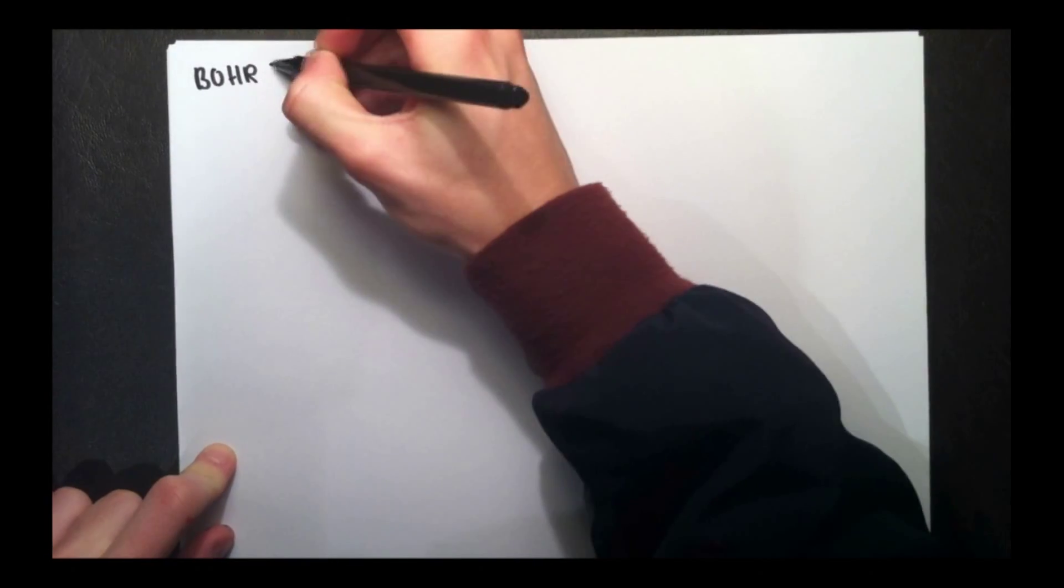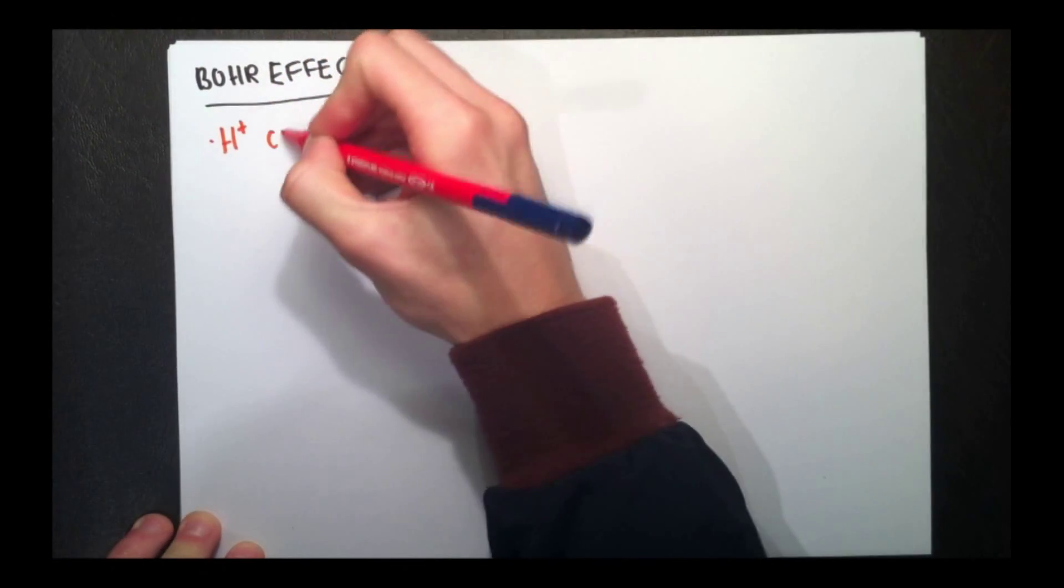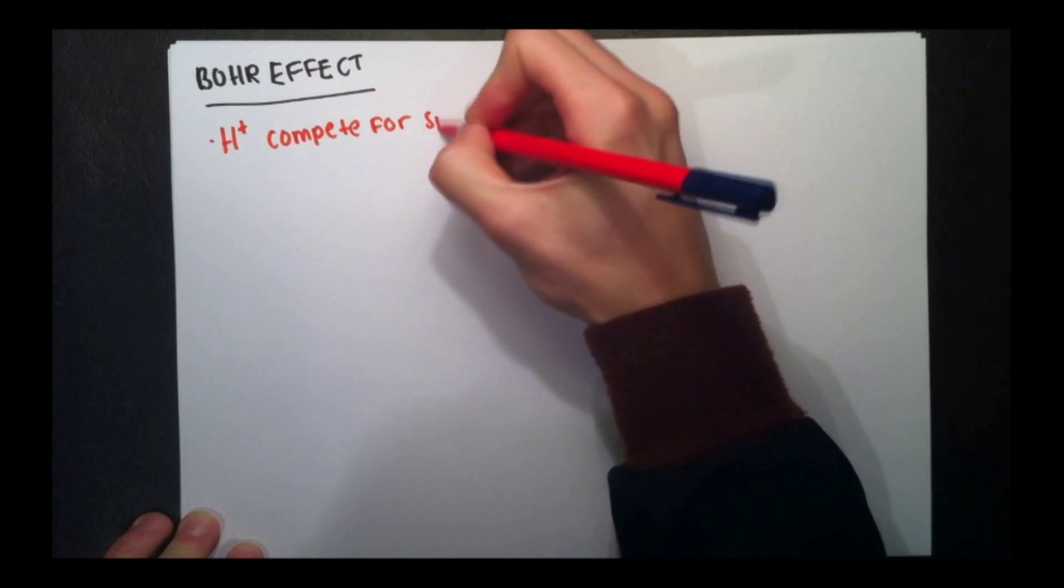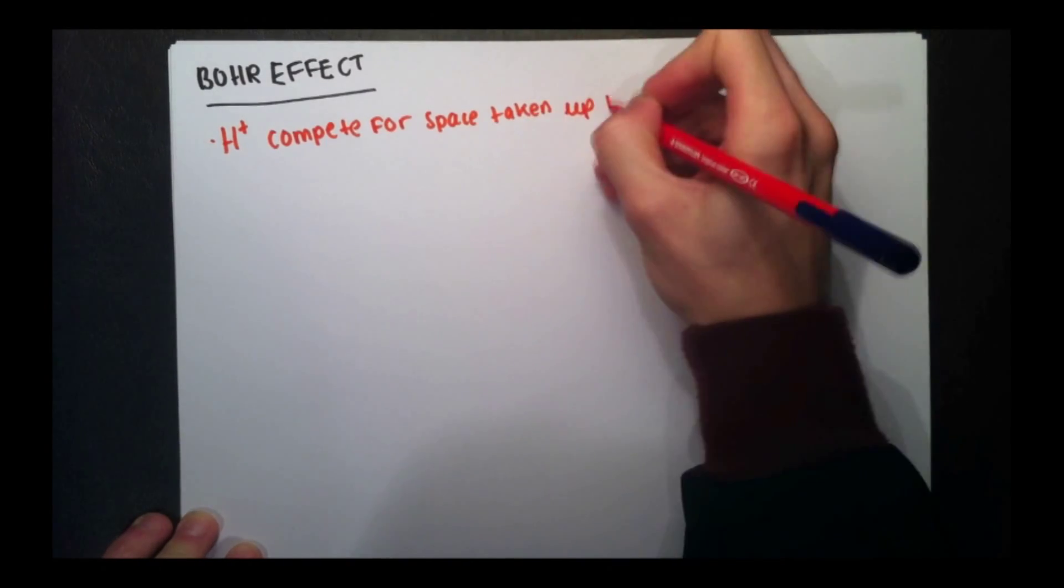So now we're going to talk about the Bohr effect and the Bohr shift. The hydrogen ions compete for space with the oxygen and essentially force the oxygen to be kicked out of the red blood cell.